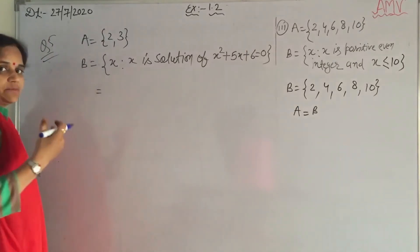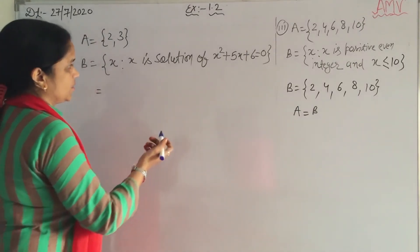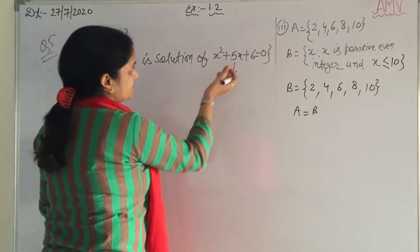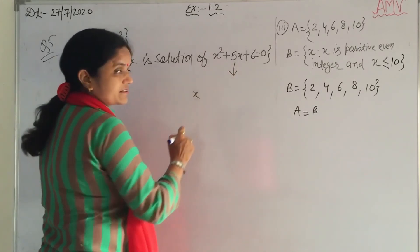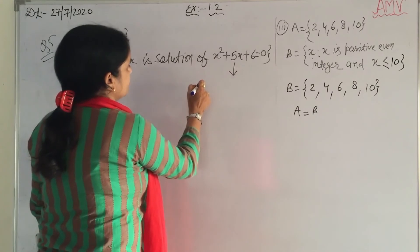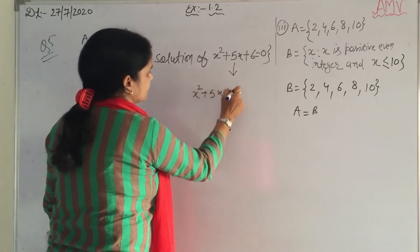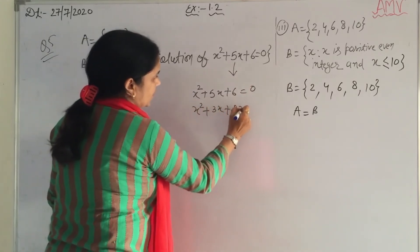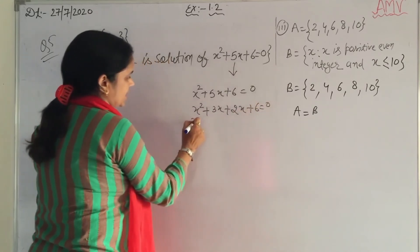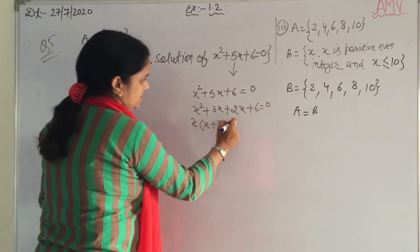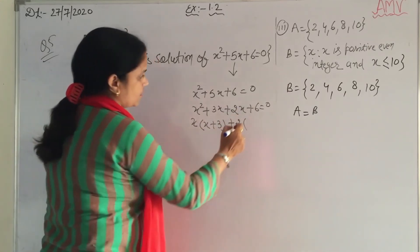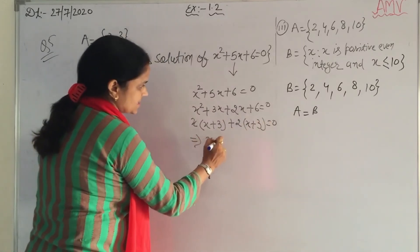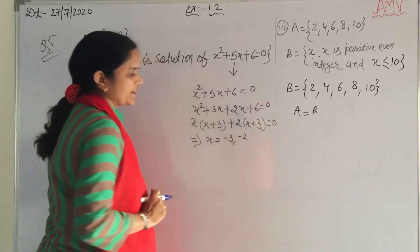We do the factorization of x² + 5x + 6 using middle term split, which you have studied in standard 10. So x² + 3x + 2x + 6 = 0. Taking x common: x(x + 3) + 2(x + 3) = 0. We get x = −3 and x = −2.